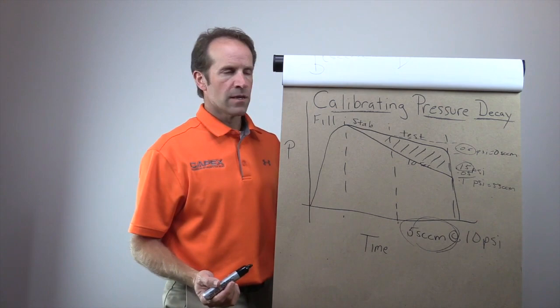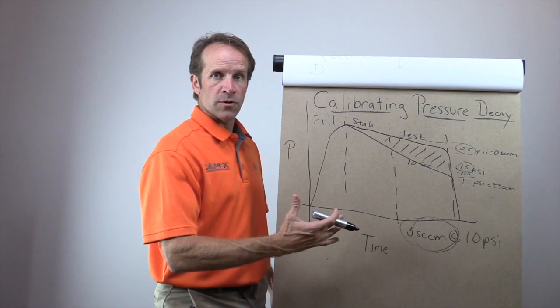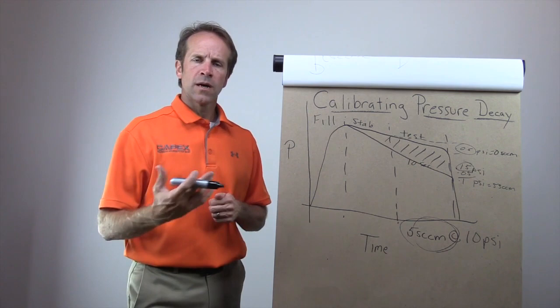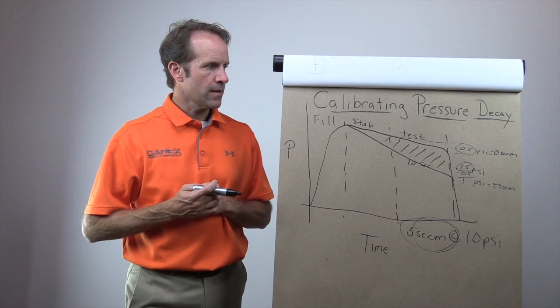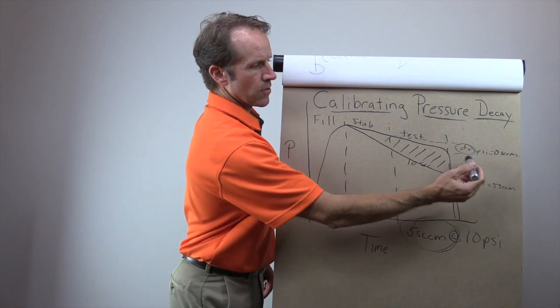So to the instrument, 0.1 psi now represents 5 standard cubic centimeters per minute. So 0.1 psi equals 5 SCCM because the calibrated leak standard that we were using was 5 SCCM. So that is how the calibration works for pressure decay leak testing.